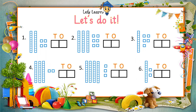Now it's time for you to solve the sums. There are some blocks given and you have to write the answers in the given tens and ones boxes. I am going to solve the first one, so do it along with me — the rest you are going to solve on your own. For the first one, count the ones blocks: 1, 2, 3, 4. There are four small boxes, so write 4 in the ones box. Now count the tens blocks: 1, 2. Write 2 in the tens box. So how many altogether? There are 24 in total. Now do the rest of them on your own.